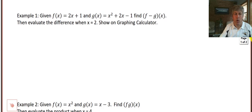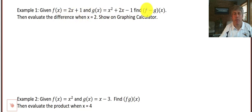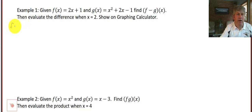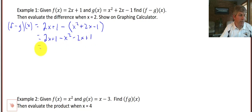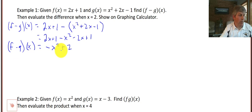In this first example, we're asked to find f minus g of x. We subtract g from f, so f minus g of x is 2x plus 1 minus all of x squared plus 2x minus 1. We have to be careful with that minus sign — that is fraught with peril. So that becomes 2x plus 1 minus x squared minus 2x plus 1, and we simplify to get negative x squared plus 2.